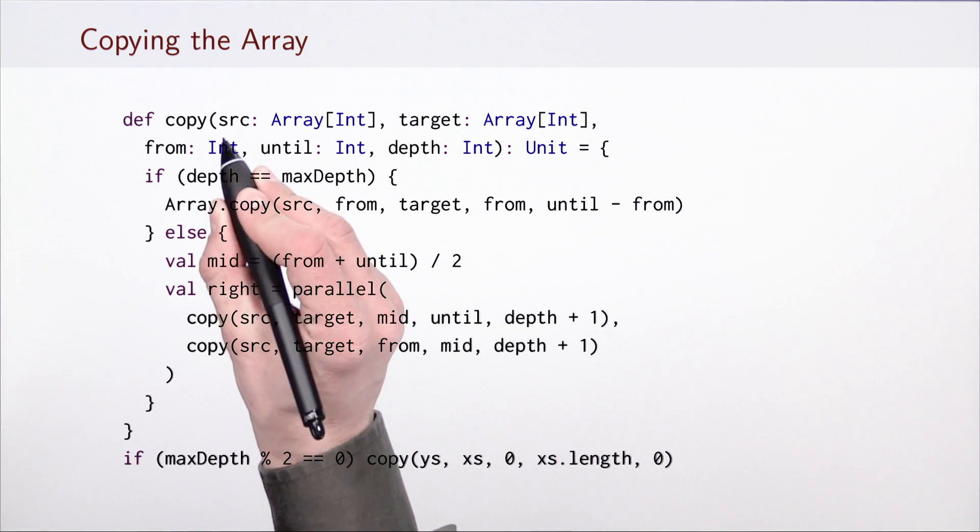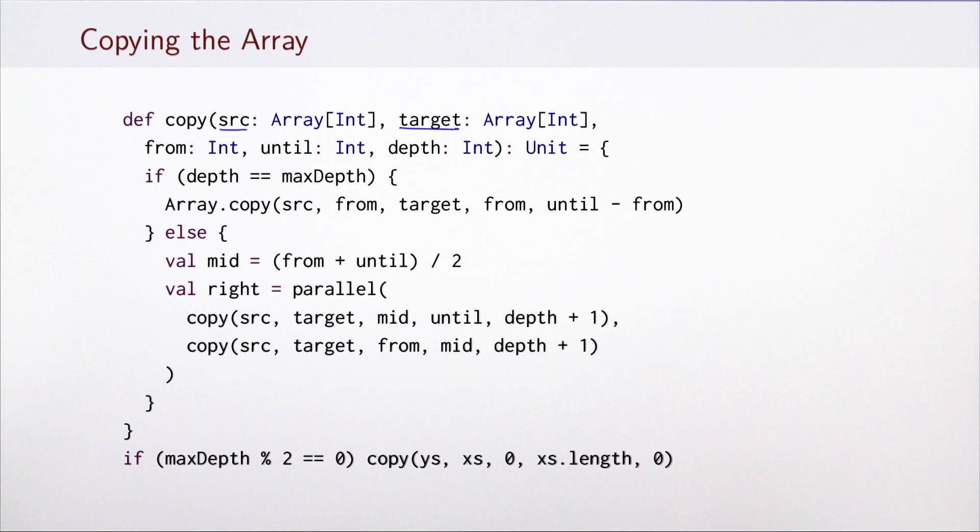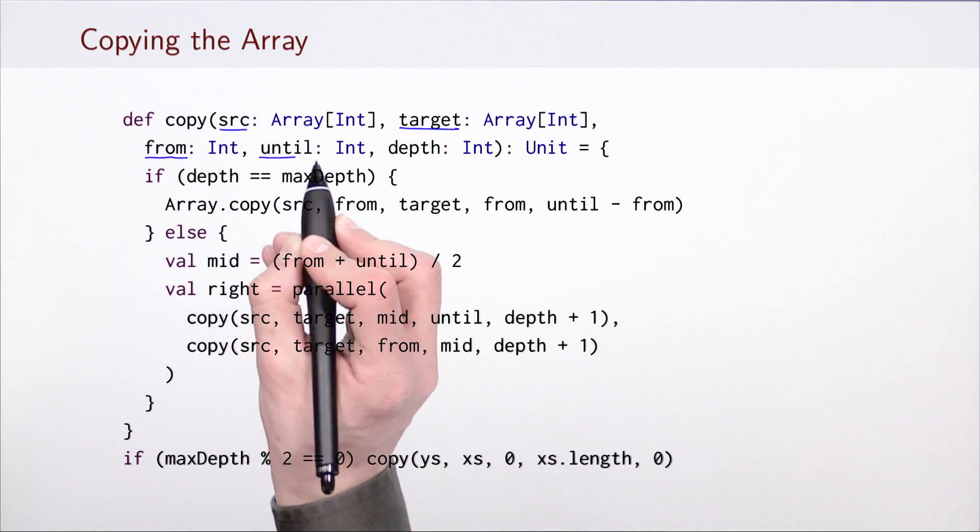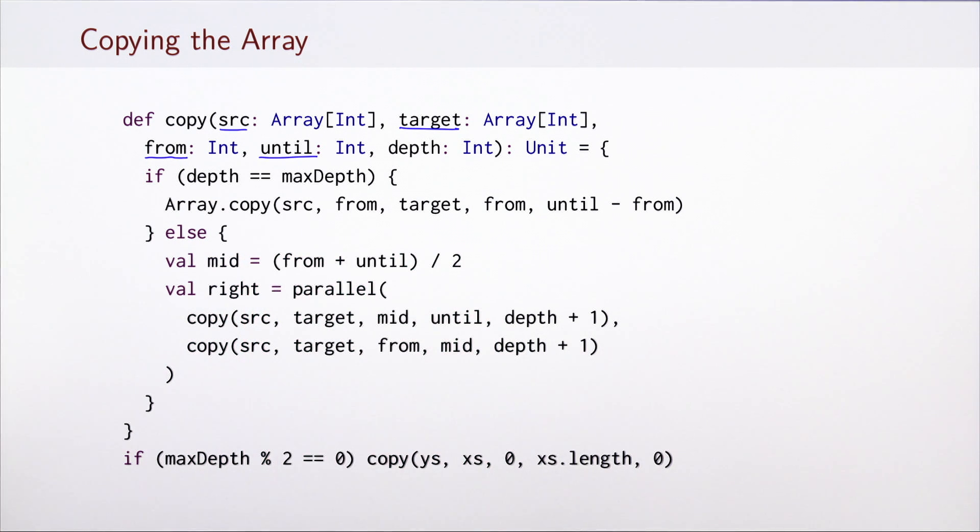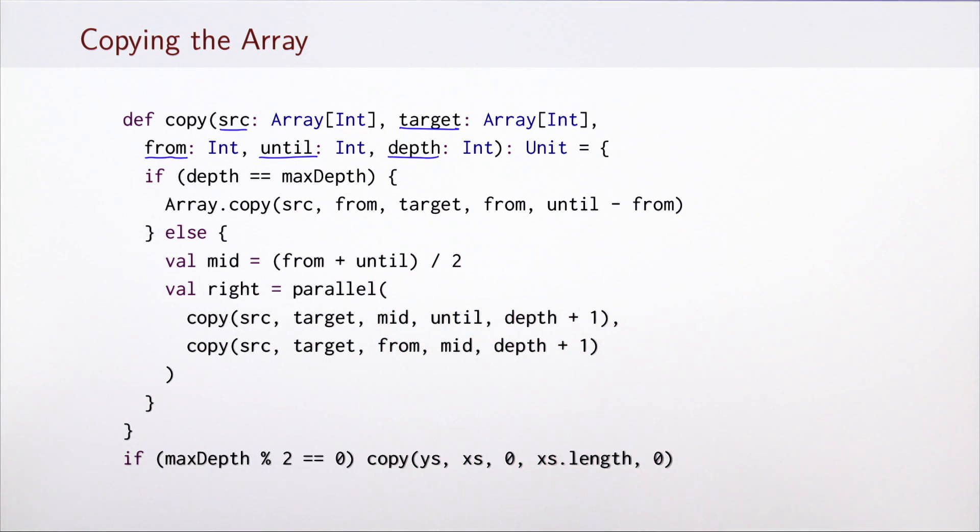A simple operation is to copy one array given by source into the target. How could we parallelize this? Let's assume that the beginning of the segment that we wish to copy is given by from and the end by until, and that we are willing to do parallelization with the depth depth.